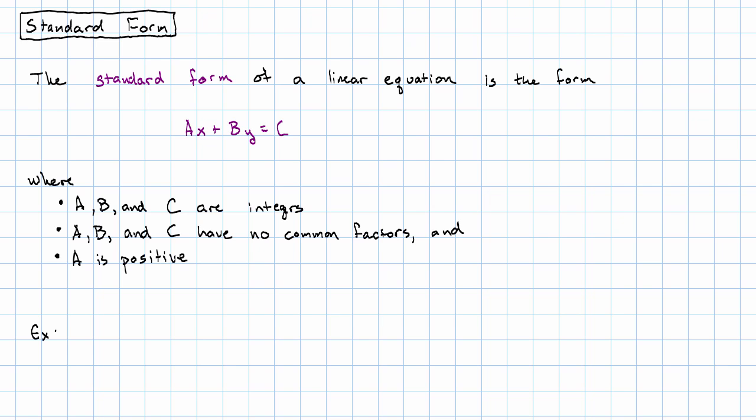Here's an example of an equation in standard form: 4x plus 3y equals 24. 4, 3, and 24 are all integers. There are no factors that are common to all three of them. 4 and 24 have factors in common, 3 and 24 have factors in common, but the list 4, 3, and 24 don't have any factors shared between all three of them. And finally, the first coefficient, 4, is a positive integer.